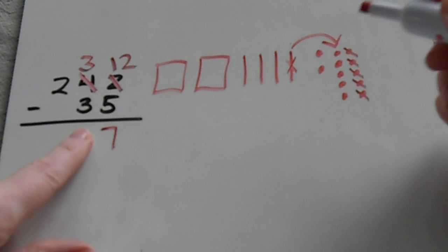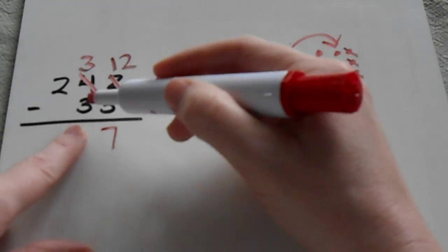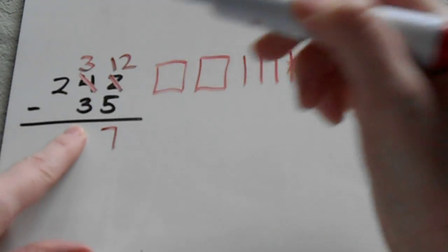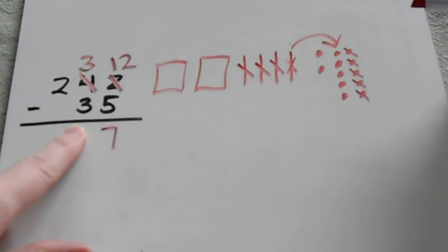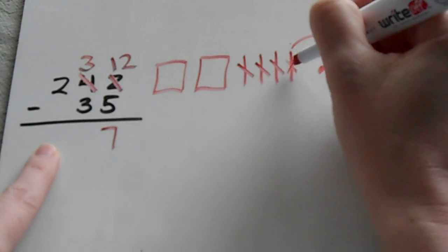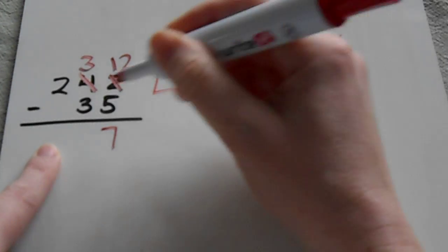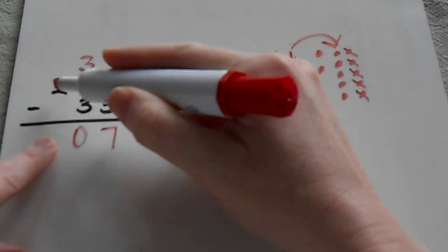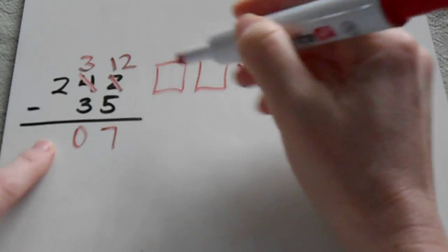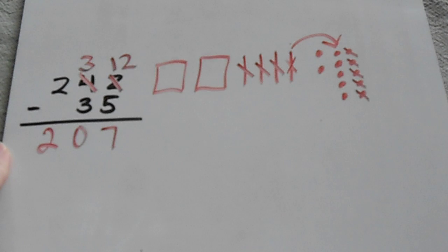Now I move to my tens place. I can see that I'm taking away three tens, so I have enough to take them away. And since I already took this one out and gave it to the ones place, I have zero tens left. And then nothing is being taken away from my hundreds place, so I still have two hundreds. So you end up with two hundred seven.